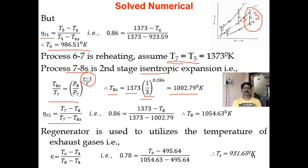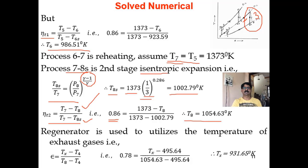Using second stage turbine efficiency of 0.86: ηT2 = (T7 - T8)/(T7 - T8s). Remember — for turbines the numerator is less and the denominator is more, so efficiency is always less than 1. After simplification, T8 = 1054.53 K. Note T8 > T8s, which is consistent since on the TS diagram T8 is at a higher level than T8s.